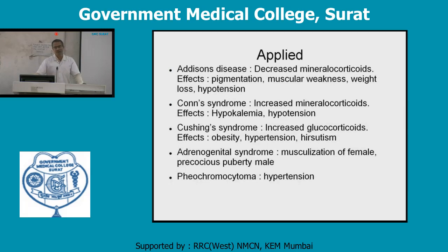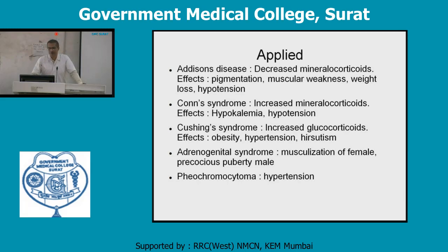Regarding applied anatomy: Addison's disease results from decreased secretion of mineralocorticoids (aldosterone) from the cortex. Effects include increased pigmentation of the skin, muscular weakness, weight loss, and hypotension.